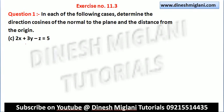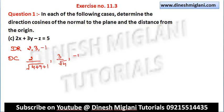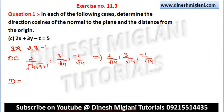Part 3: the plane is 2x + 3y − z = 5. The direction ratios of the normal are 2, 3, and −1. The direction cosines are 2/√14, 3/√14, and −1/√14, since √(4+9+1) = √14. The distance from the origin is |−5|/√14 = 5/√14.